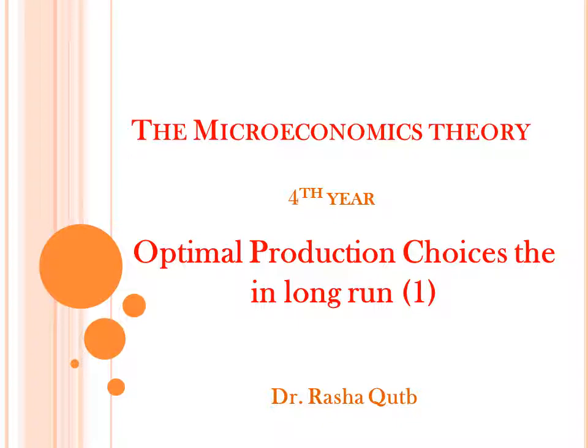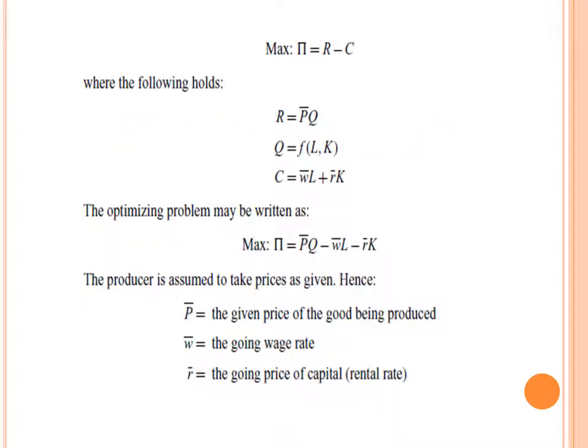Let's move to optimization behavior of the producer in the long run and the optimal production choices. Relating to the optimizing behavior of the producer in the long run, we have basic assumptions. First, the producer is rational — he aims to maximize his profits, not his total output. We are in the long run, which means that all inputs are variable.